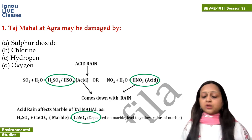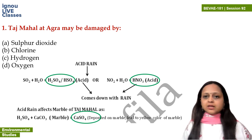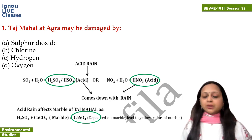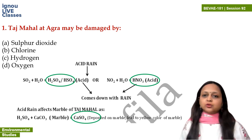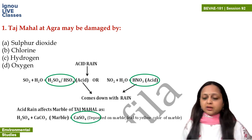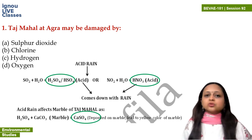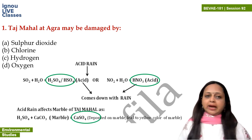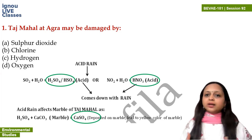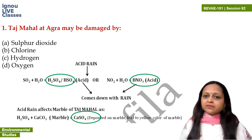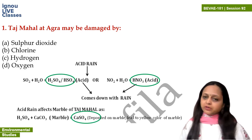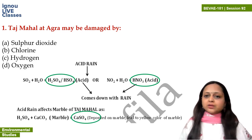So when marble reacts with chlorine, it becomes calcium chloride, which is an acid — so it does react with marble. But now we have to see chlorine or sulfur dioxide — which is more concentrated in air? We do have chlorine in air, but in more concentration, sulfur dioxide is present in air.